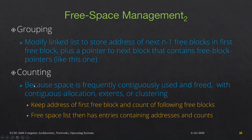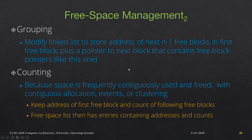Counting works because space is frequently allocated and freed contiguously. Instead of listing individual free blocks, we keep the address of the first free block and count how many free blocks follow it contiguously. The free space list then has entries containing an address and a count. So we point to the first free block and say, for example, that contiguously we have 10 free blocks right there.